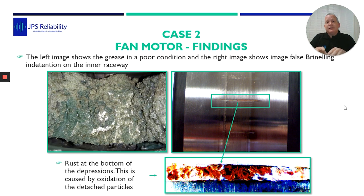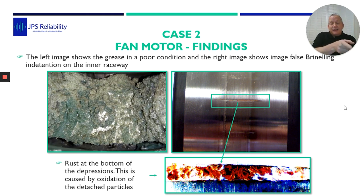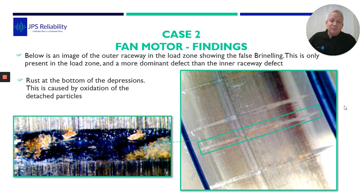They shut the fan down in a controlled situation, took the bearing out, and we went to have a look. On the left hand side of the screen you can see the grease — the grease is contaminated and starting to separate within itself. There is also a picture of the inner race where you can see a mark on it; when we looked under the microscope it's actually a crush on it, so we can see that's forced brinelling. But the data was highest on the outer race. When we looked at the outer race, these dents were like craters — you could feel them.